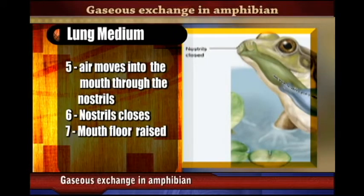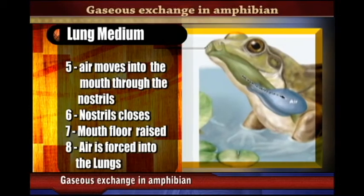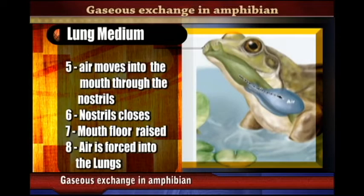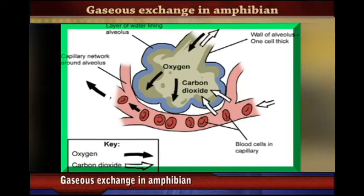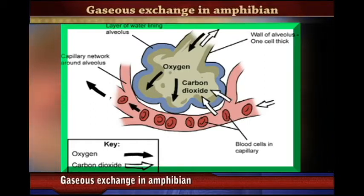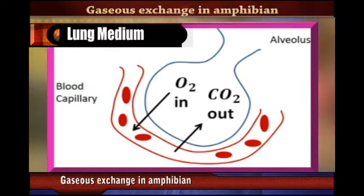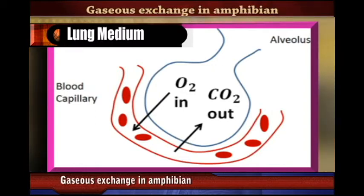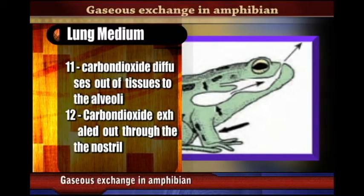The mouth floor is raised, forcing air into the lungs. In the lungs, gaseous exchange takes place between the alveoli and the blood. Because of the high concentration of oxygen in the alveoli and the low concentration in the blood, oxygen diffuses from the alveoli into the blood. Carbon dioxide diffuses out of the blood into the alveoli.